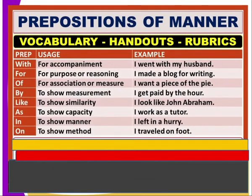Prepositions of manner include words such as 'with,' 'for,' 'of,' 'by,' 'like,' 'as,' 'in.' For instance, 'with' is used for accompaniment: 'I went with my husband.' 'For' is used for purpose or reasoning: 'I made a blog for writing.' 'Of' for association: 'I want a piece of the pie.' You can read through the rest.